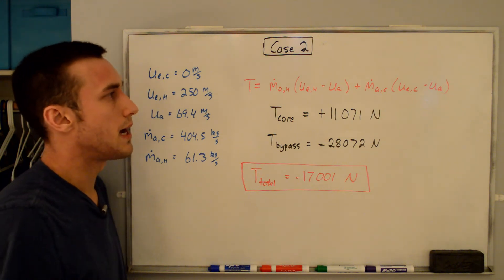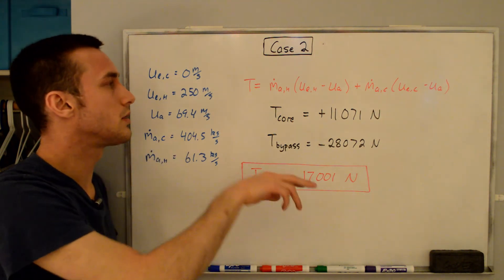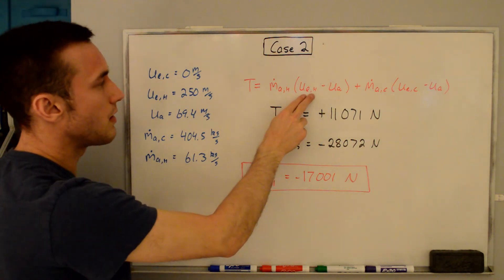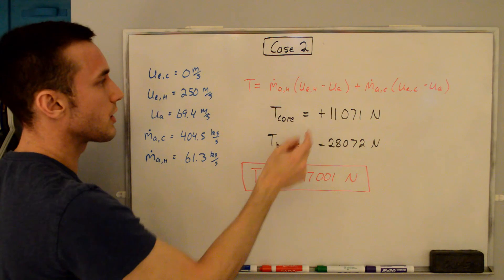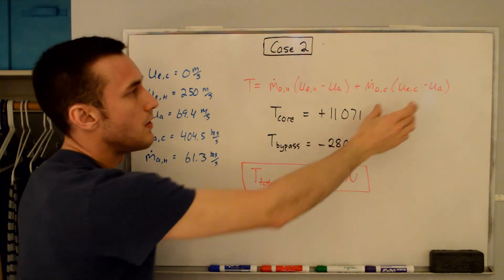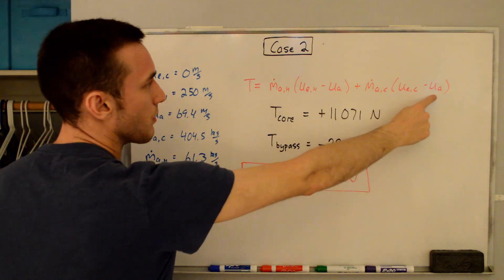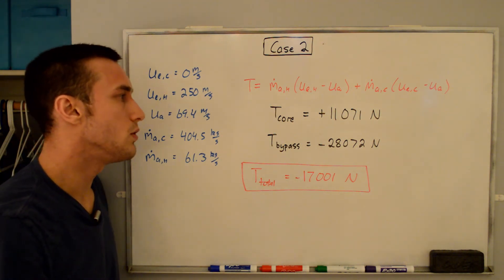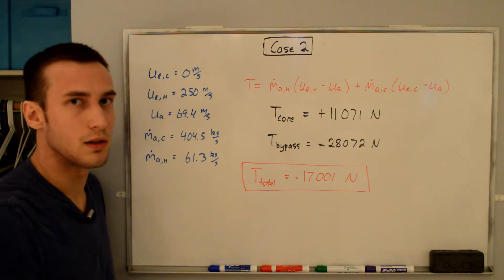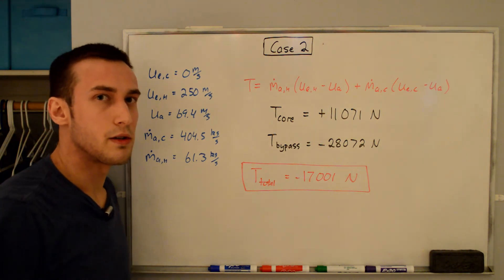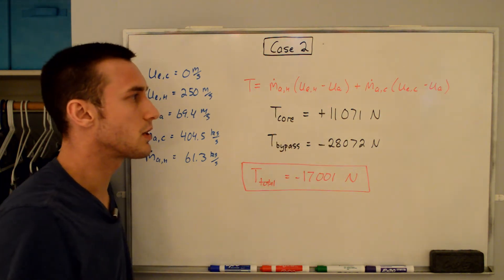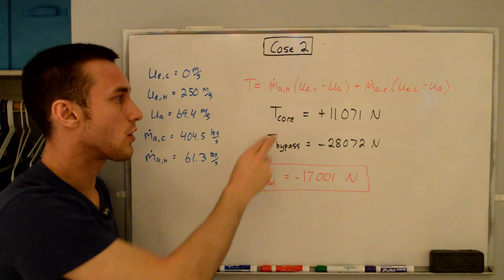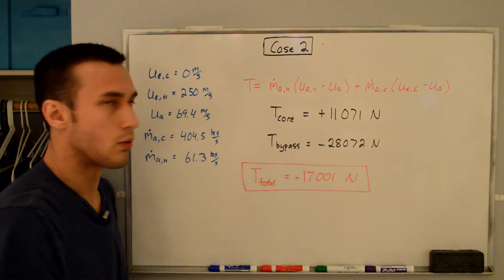For case two, only the bypass flow is deflected and the core stream continues undisturbed. The only change in variables is the core exit velocity, which is now 250 m/s instead of zero. Recomputing the core thrust gives positive 11,071 Newtons, while the bypass thrust remains negative 28,072 Newtons. Adding these together gives a total of negative 17,001 Newtons — a reverse thrust of 17 kilonewtons opposing the motion. Interestingly, the undisturbed core is still producing positive thrust trying to accelerate the plane, but the bypass thrust dwarfs it.